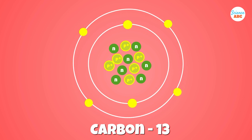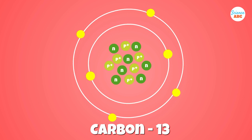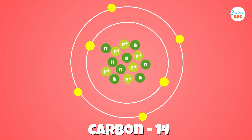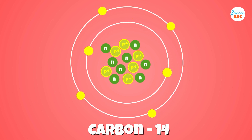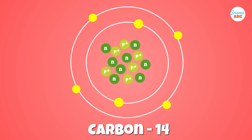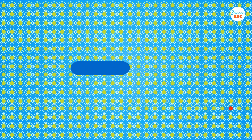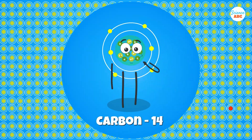The next heaviest carbon isotope is carbon-13, which contains six protons and seven neutrons. The third and rarest of the three carbon isotopes is carbon-14, which has six protons and eight neutrons.